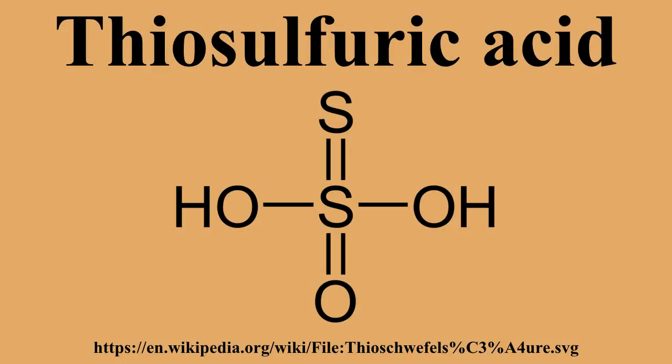Anhydrous methods of producing the acid were developed by Schmidt: H₂S + SO₃ → hydrogen thiosulfate; 2Na₂O sodium thiosulfate + 2 hydrogen chloride → 2 sodium chloride + hydrogen thiosulfate; HSO₃Cl + H₂S → hydrogen chloride + hydrogen thiosulfate.